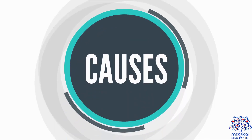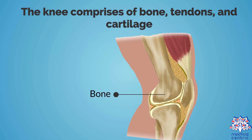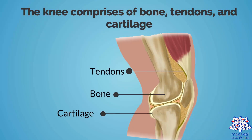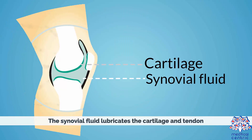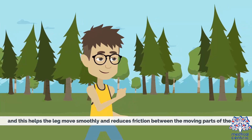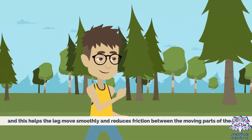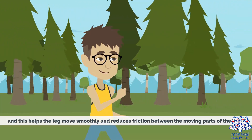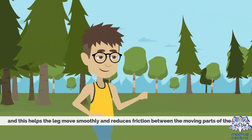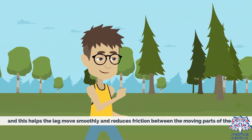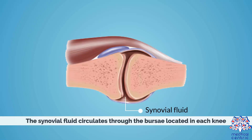Causes: The knee comprises bone, tendons, and cartilage. The synovial fluid lubricates the cartilage and tendon, and this helps the leg move smoothly and reduces friction between the moving parts of the knee. The synovial fluid circulates through the bursae located in each knee.